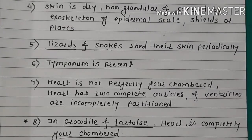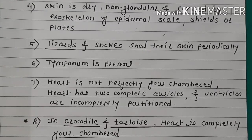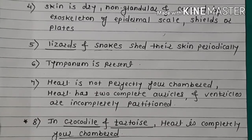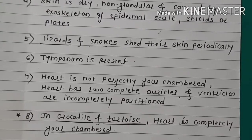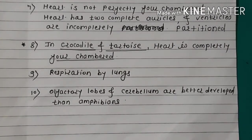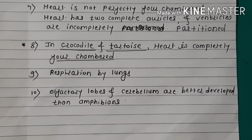Skin is dry, non-glandular, and covered by exoskeleton — that is epidermal scales or plates. Lizards and snakes shed their skin periodically. Tympanum is present. Heart is not perfectly four-chambered; it consists two complete auricles and two incomplete ventricles. But in crocodile and tortoise, the heart is completely four-chambered.